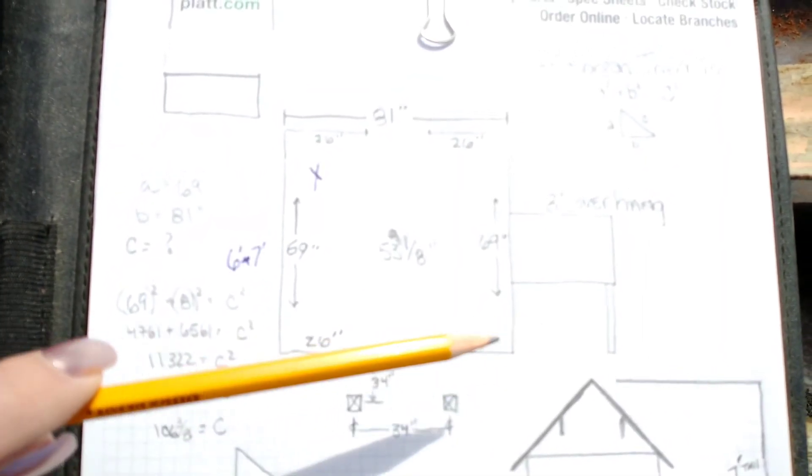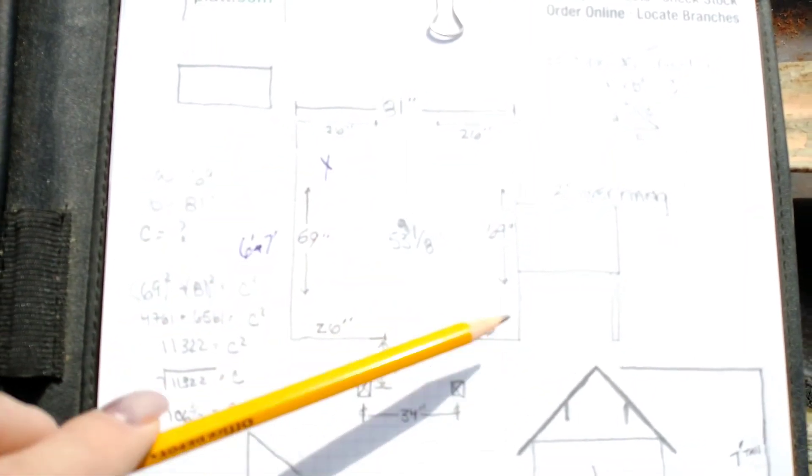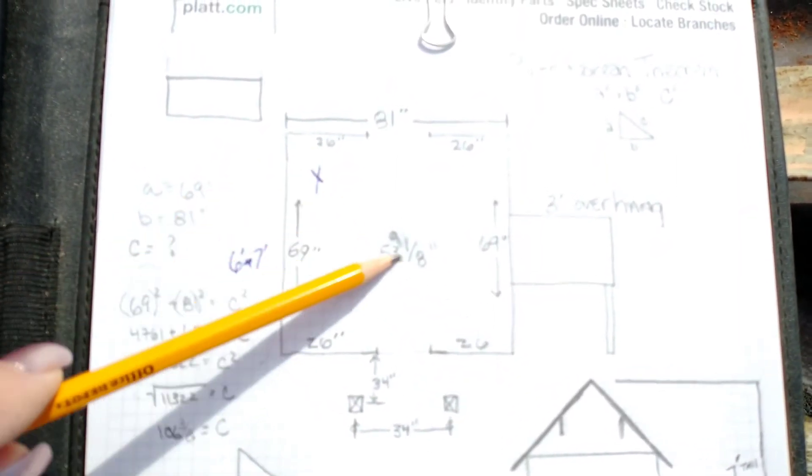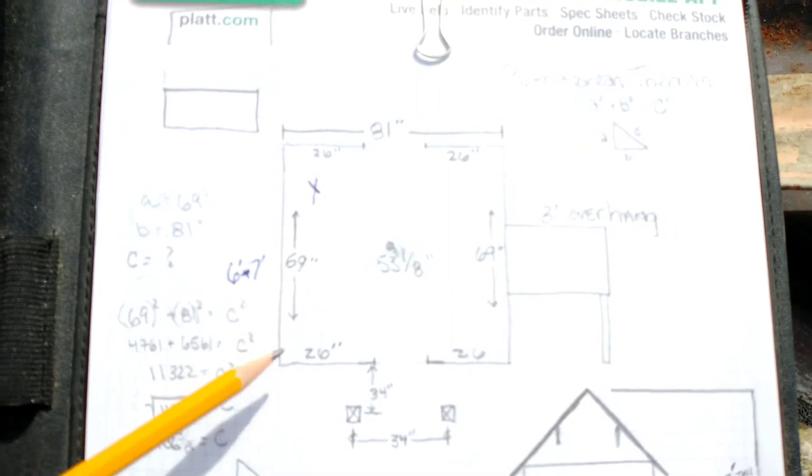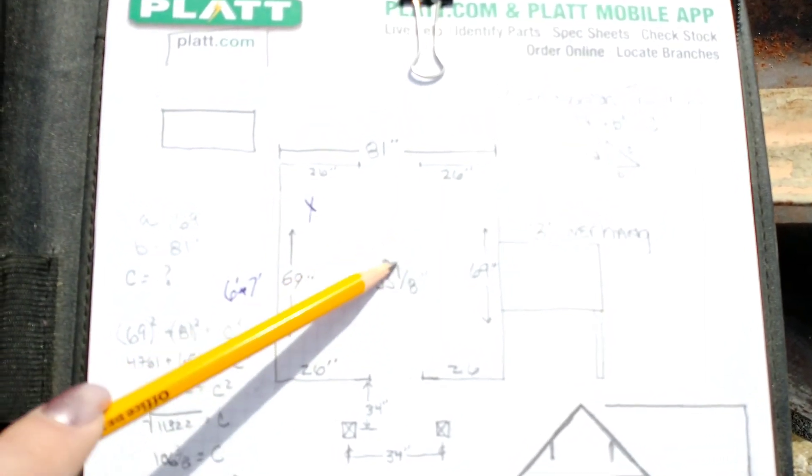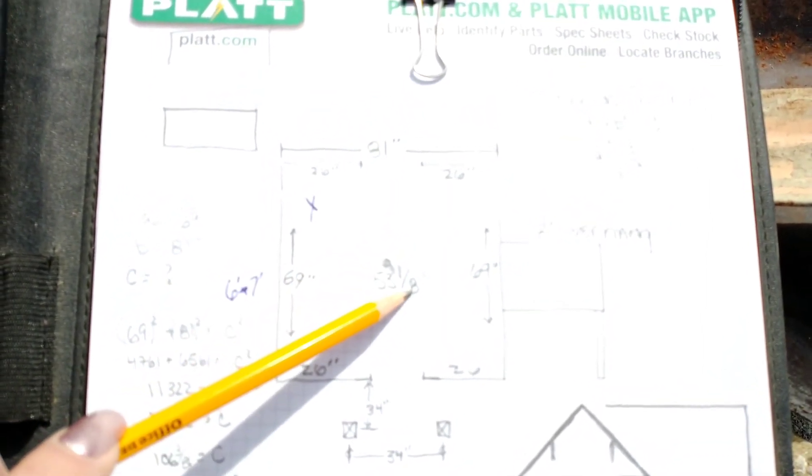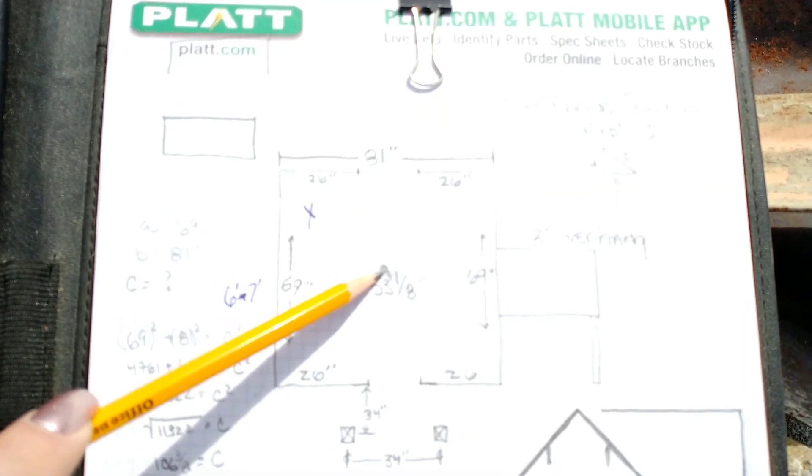So what that means is when I make this side of my building and I make this side of my building, this is going to be 106 and 3 eighths inches long. And so is this, but they need to cross each other at 53 and 1 eighths inch right there in the middle so that I know that my entire building is square.